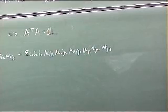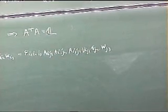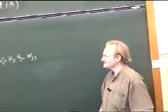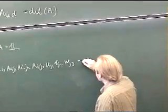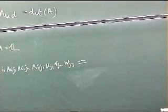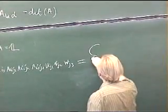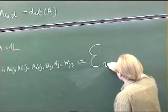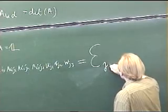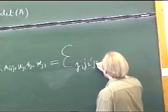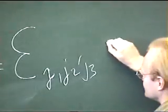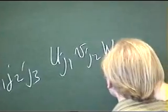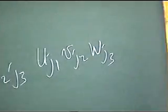So what would I like this to be equal to? Let's say j1, j2, j3, uj1, vj2, wj3.